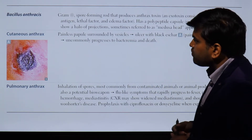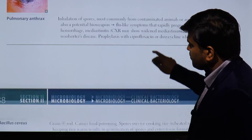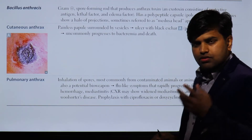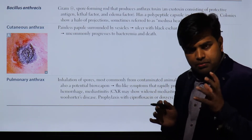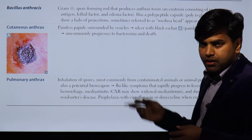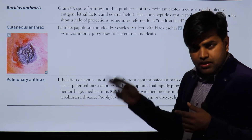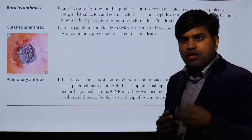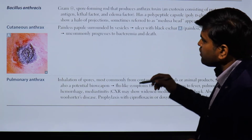We are now in the microbiology section dealing with Bacillus anthracis. Bacillus is a gram-positive bacillus. There are very few gram-positive bacilli. Among them, the medically important ones include Bacillus cereus, Bacillus anthracis, Clostridium species, and Corynebacterium. These account for important and dangerous diseases.